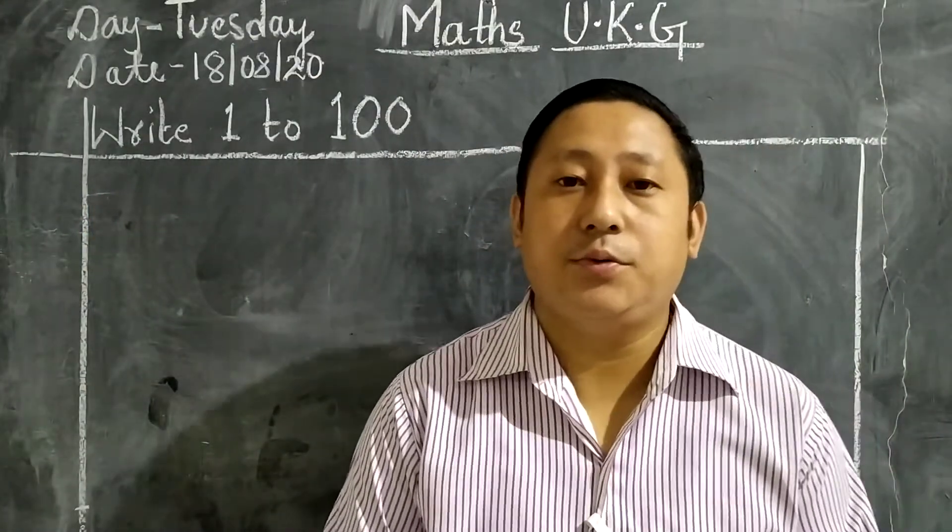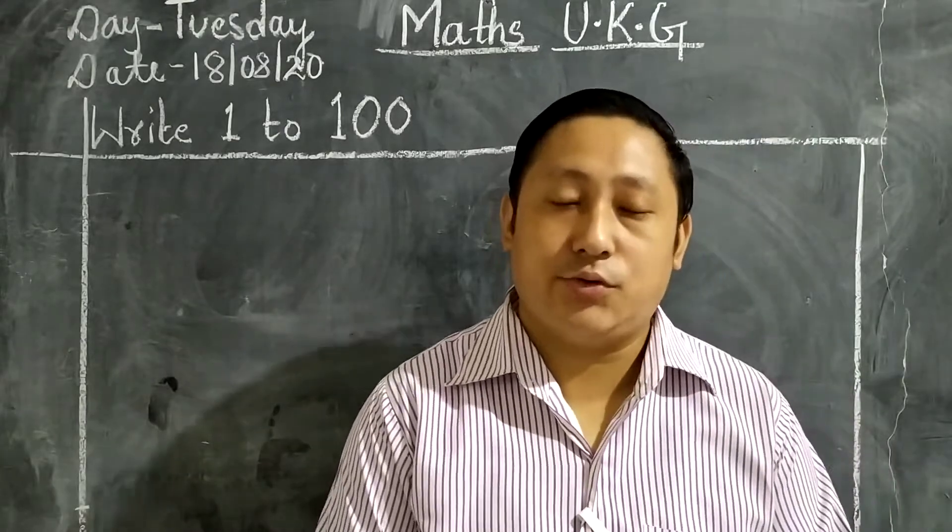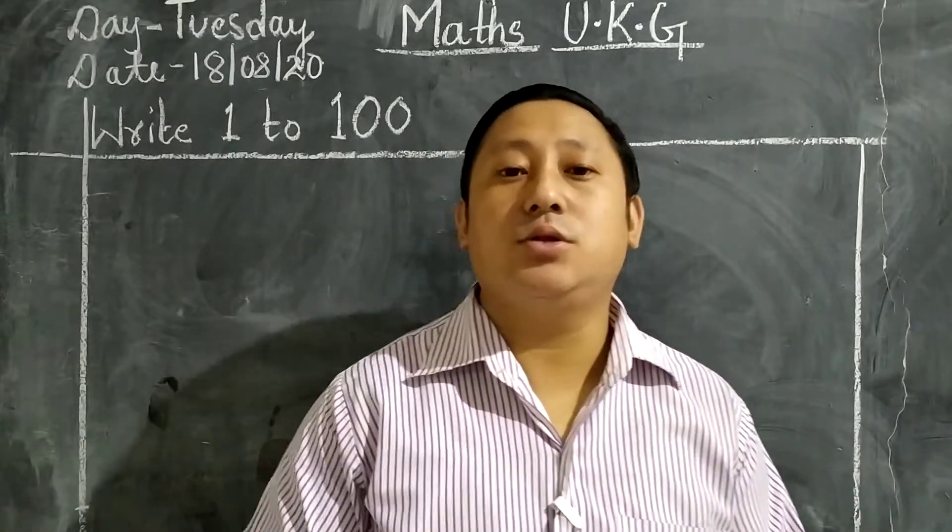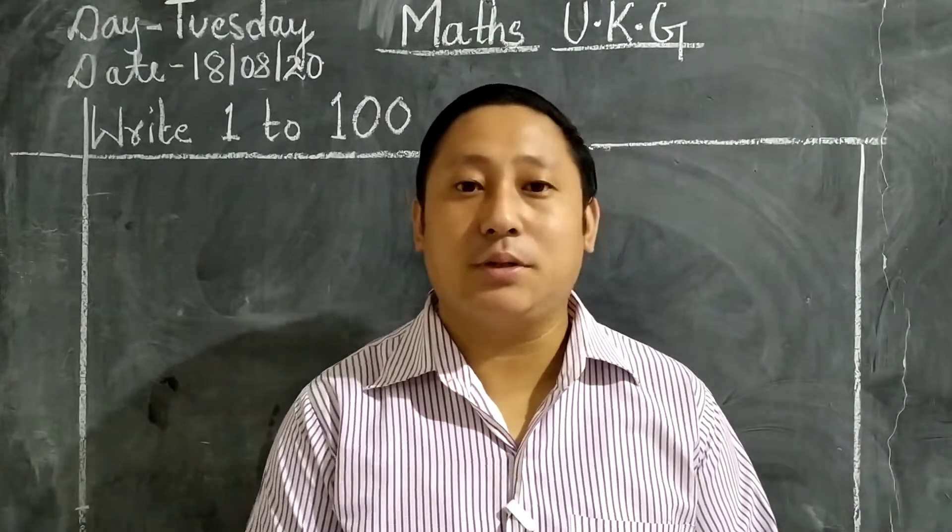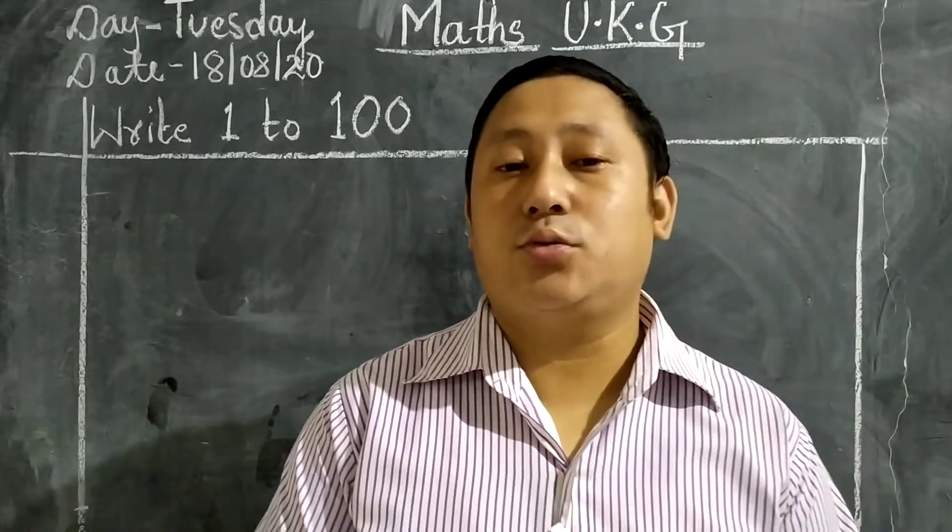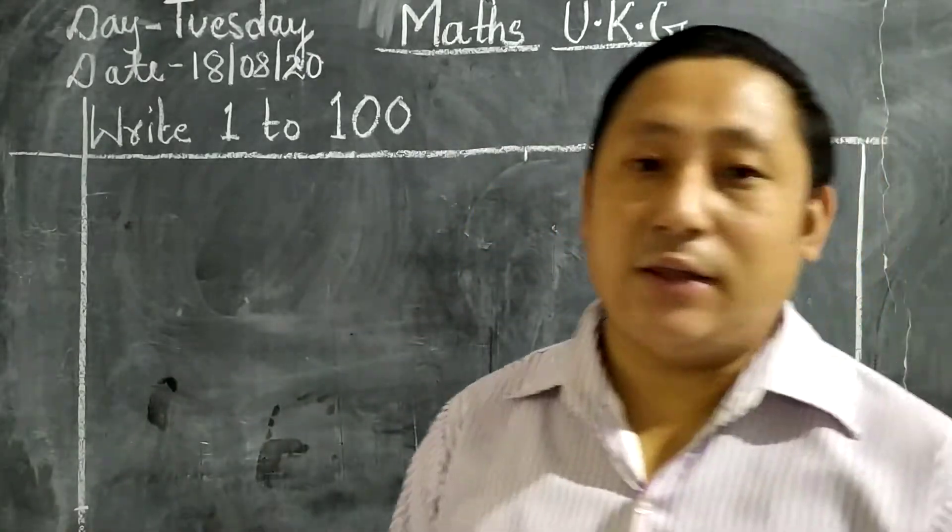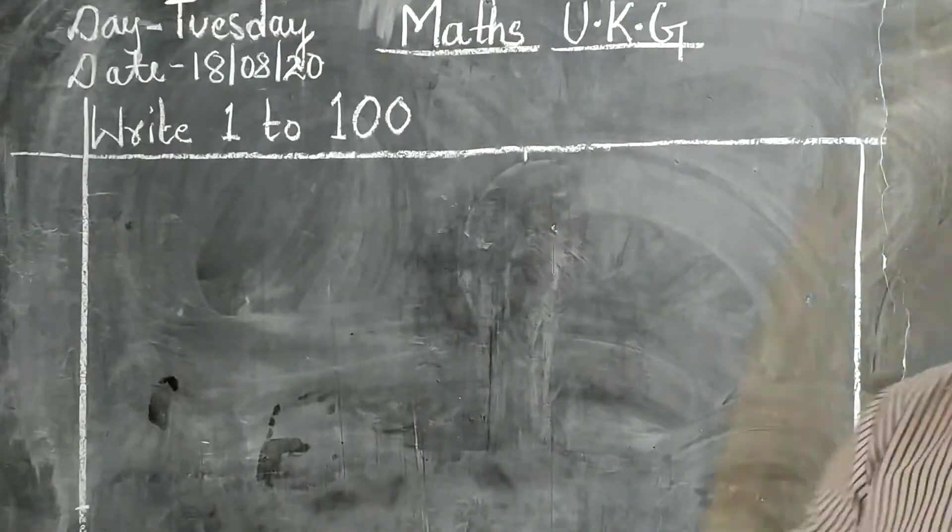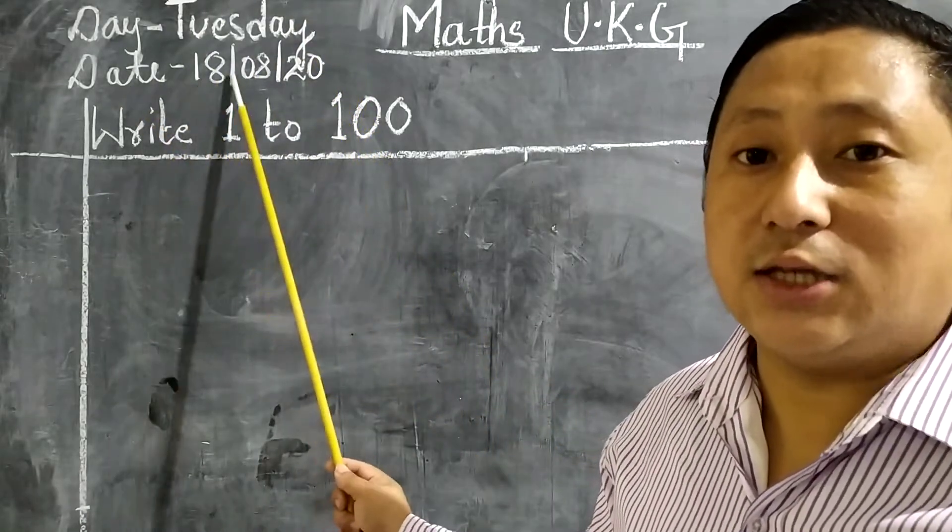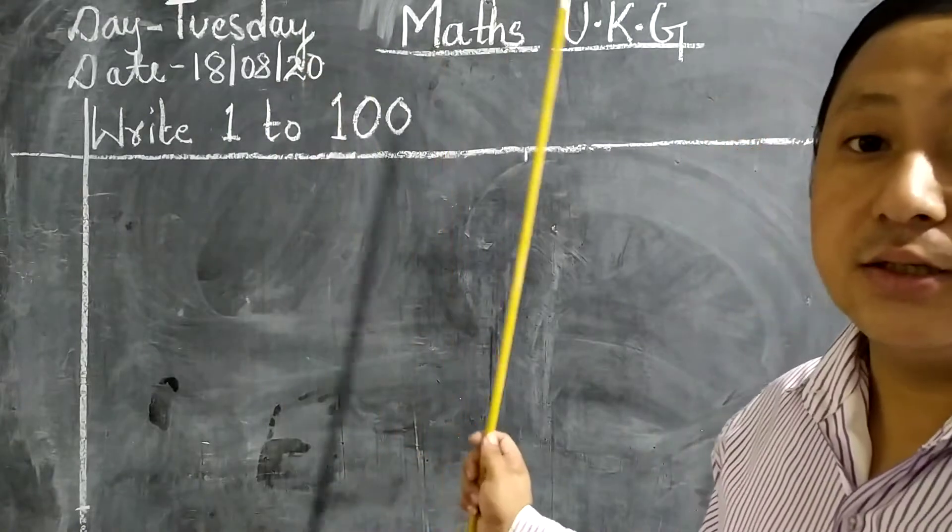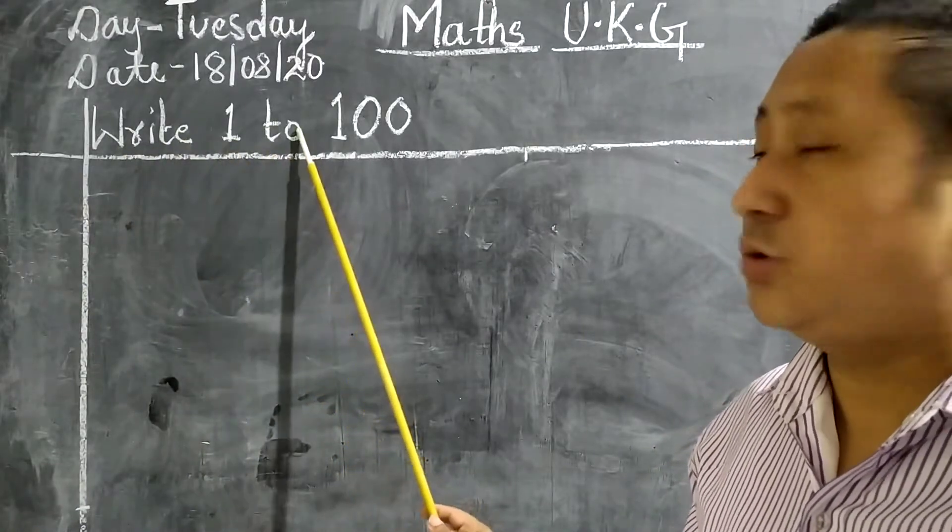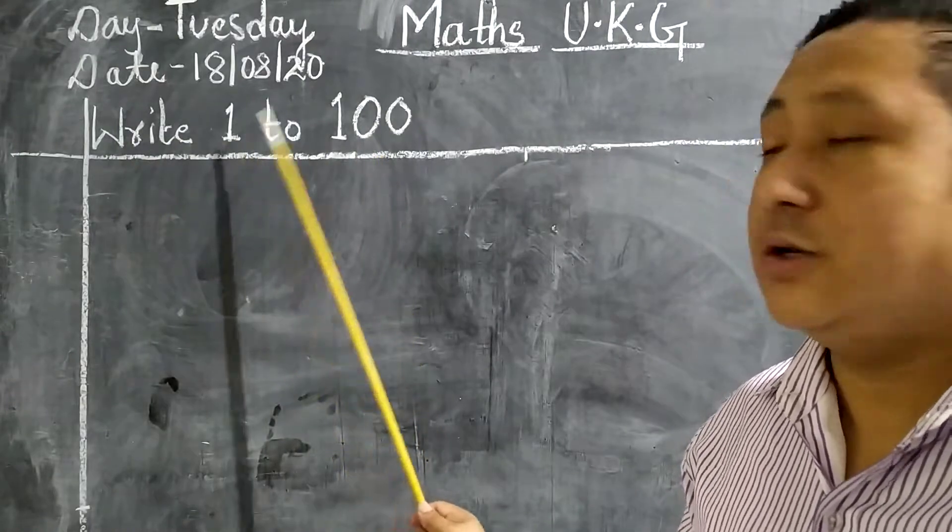A very good morning class, students. I hope you all are fine. Today I'm going to teach you math subject. Today I'm going to teach you how to write 1 to 100. We are going to do revision because all the chapters have been completed. So today I'm going to start with write 1 to 100 from the beginning of the chapter. Today day is Tuesday, date is 18/8/2020. Maths UKG class, write 1 to 100.